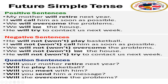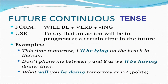Next: 'We will leave the house.' Negative: 'We will not leave the house' — or you can write 'We won't leave the house.' Interrogative: 'Will we leave the house?' Last one: 'He will try to contact us next week.' Negative: 'He will not try to contact us next week.' Interrogative: just exchange 'will' and 'he' — 'Will he try to contact us next week?' It's very simple.